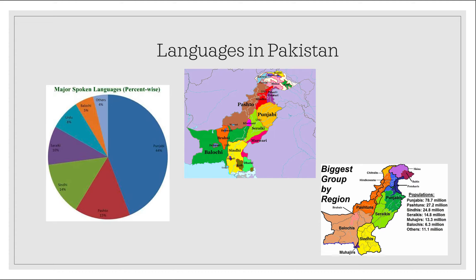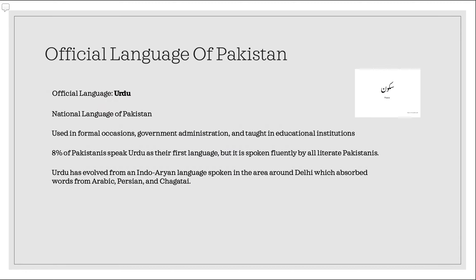In the other graph, located to the left, we can see what are the most spoken languages, with the previously mentioned Punjabi being the highest ranked at 44%. Although not the highest or most frequently spoken, Urdu is the official and national language of Pakistan, known and used in formal and government occasions, as well as taught in schools and educational institutions. In accordance with the graph we saw previously, only 8% of Pakistan speak Urdu as their first language, but it is taught and spoken by all of the Pakistanis that are literate.